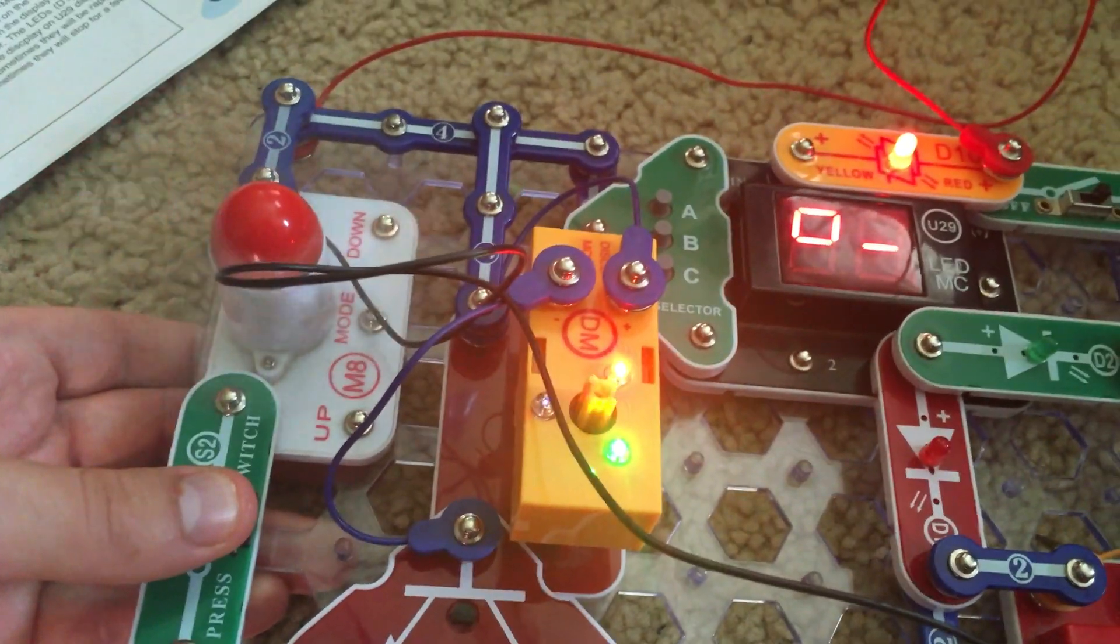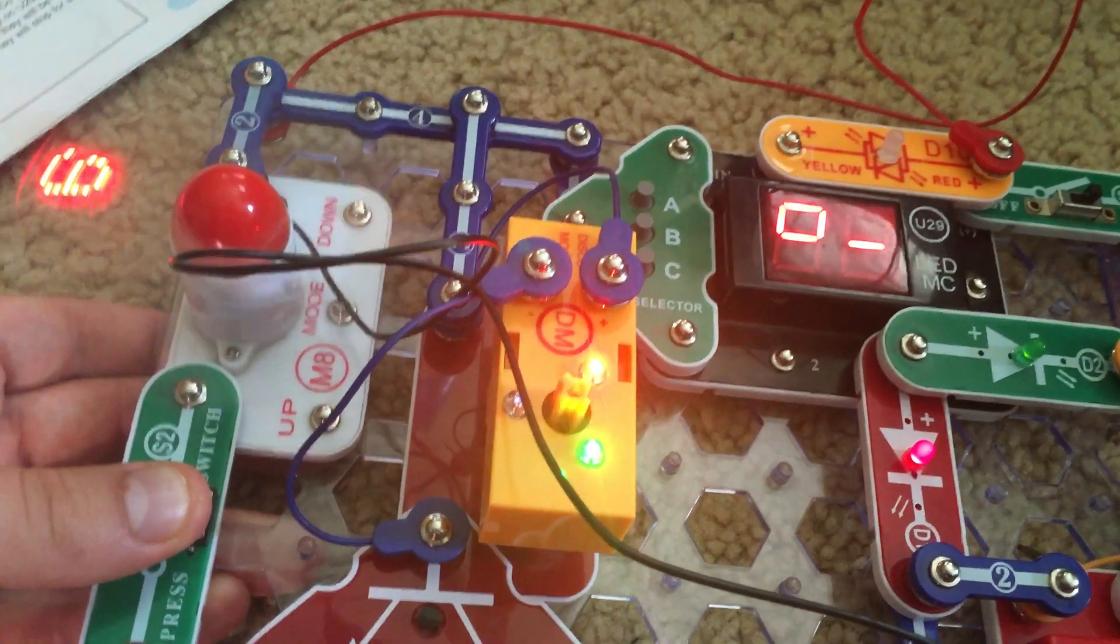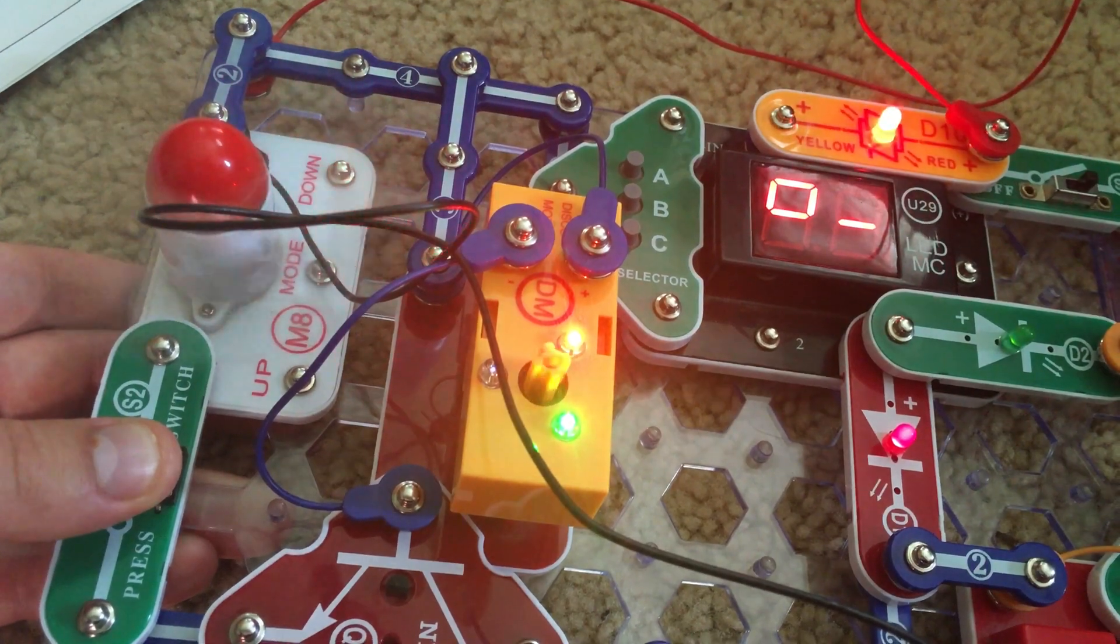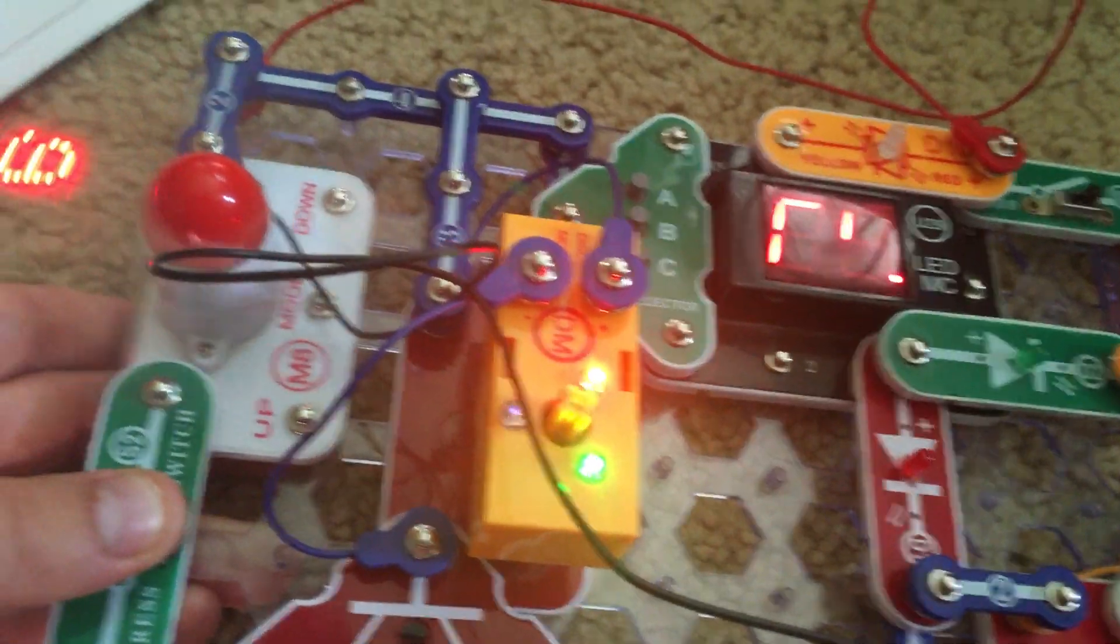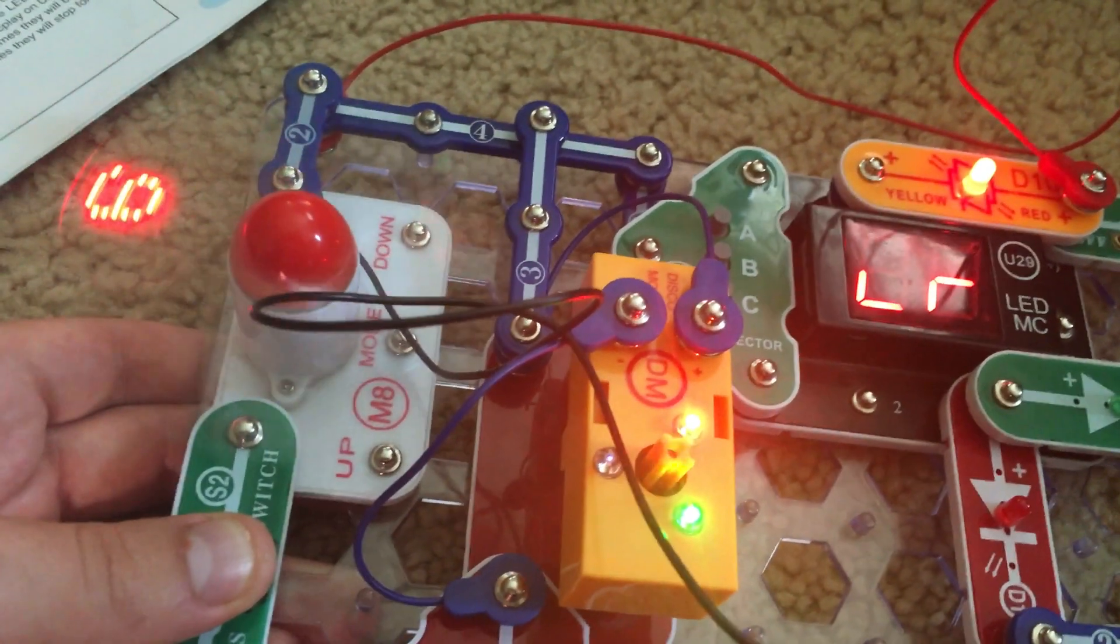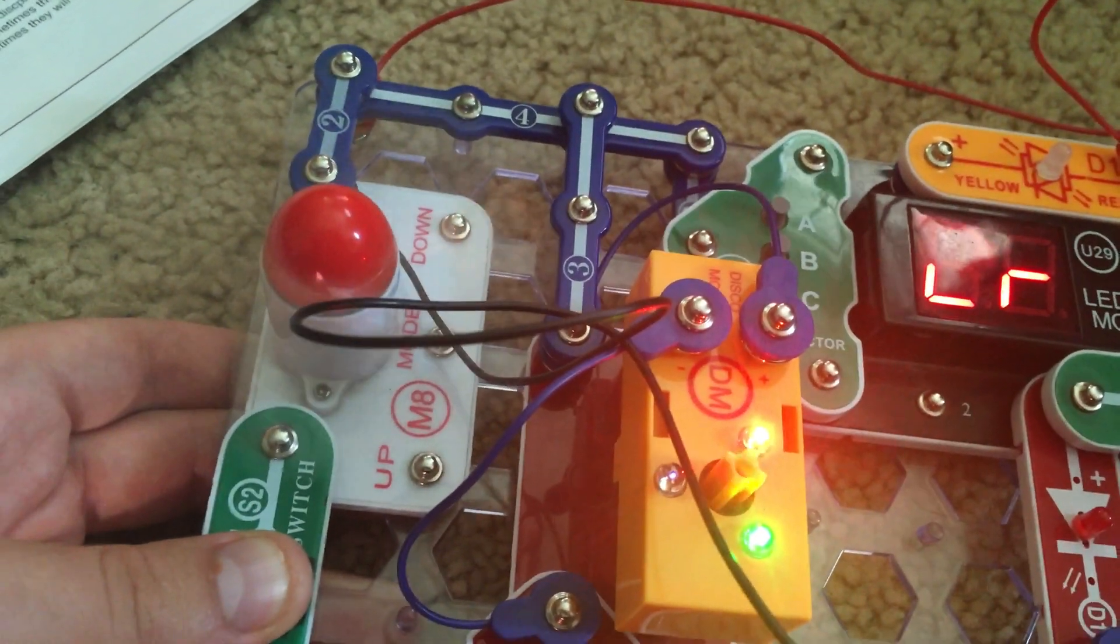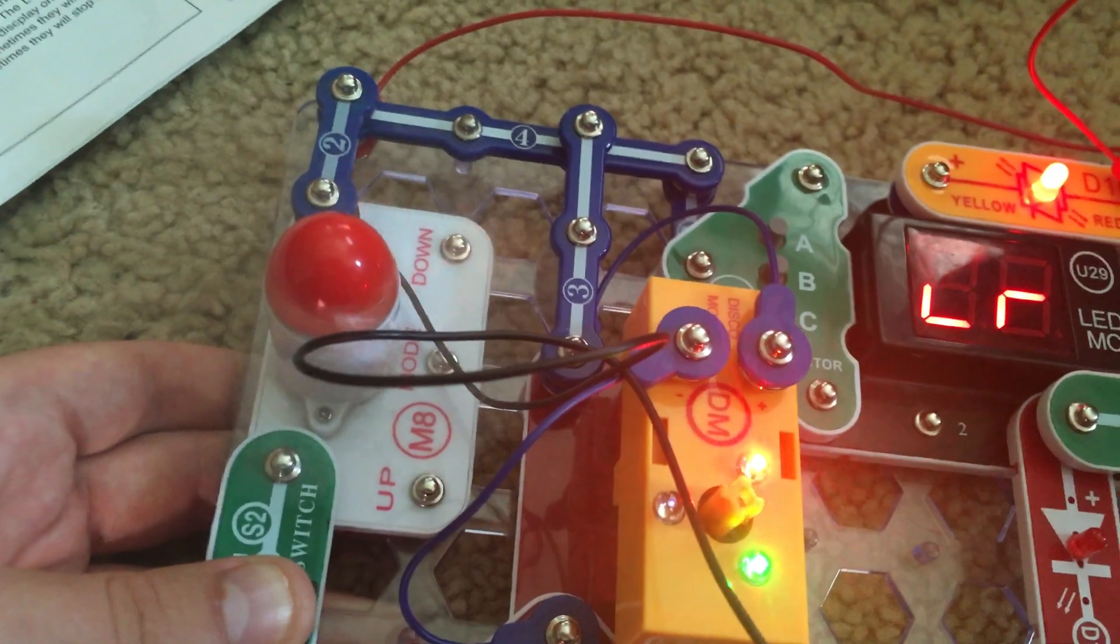If we hold down the press switch, the programmable fan will spin and display messages. Unfortunately, we have to keep S2 held down for the programmable fan to stay on. But if we hold it down long enough, we will see all of the messages that it can hold.